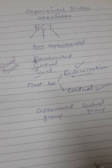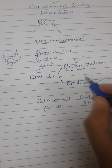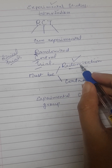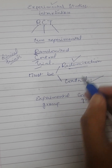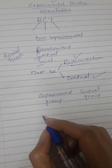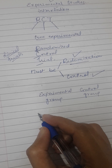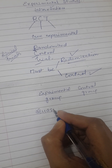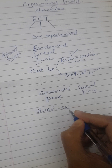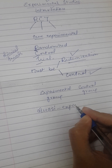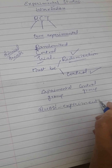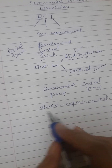If either the control group is not present or randomization is not present, then that experimental study is called a quasi-experimental study. Students usually get confused about this.